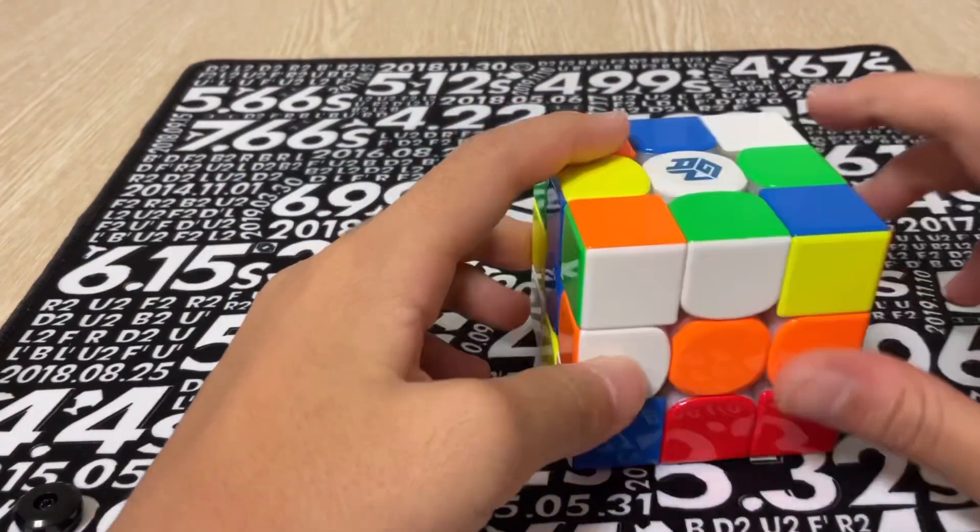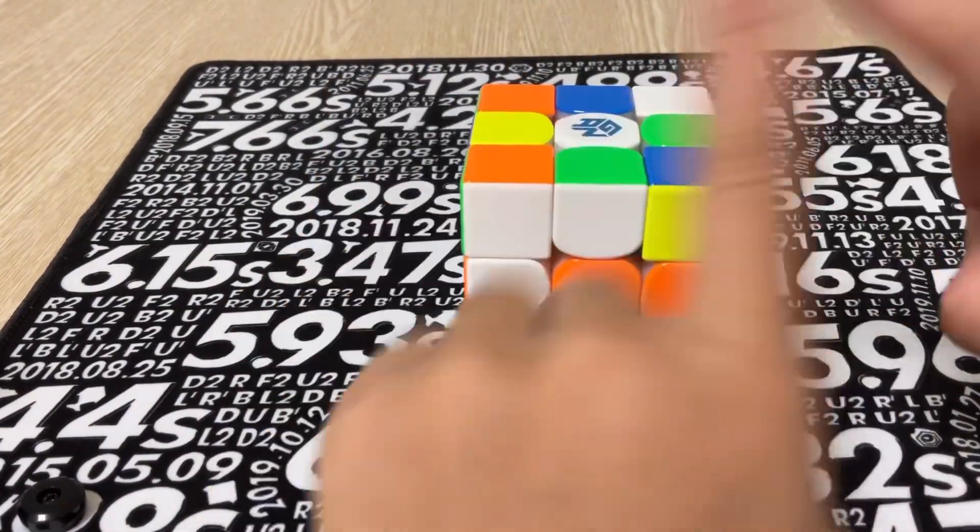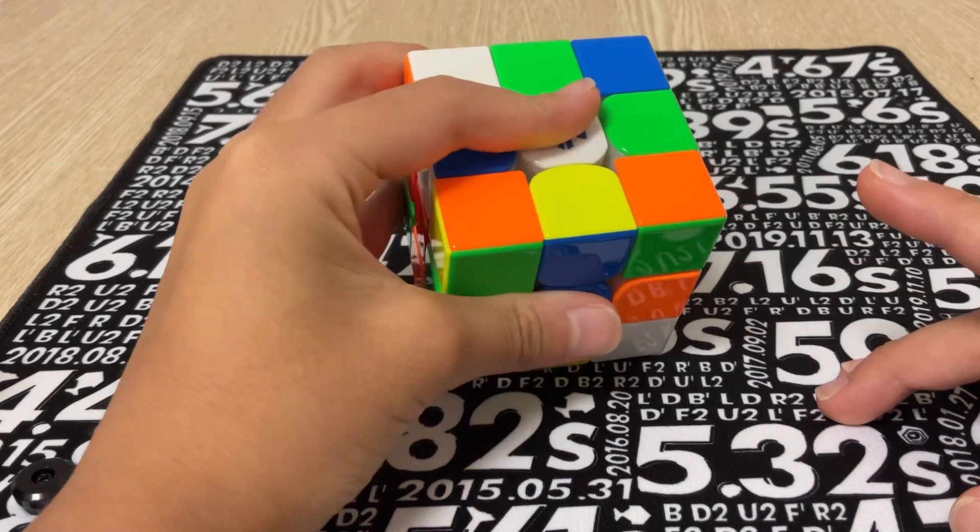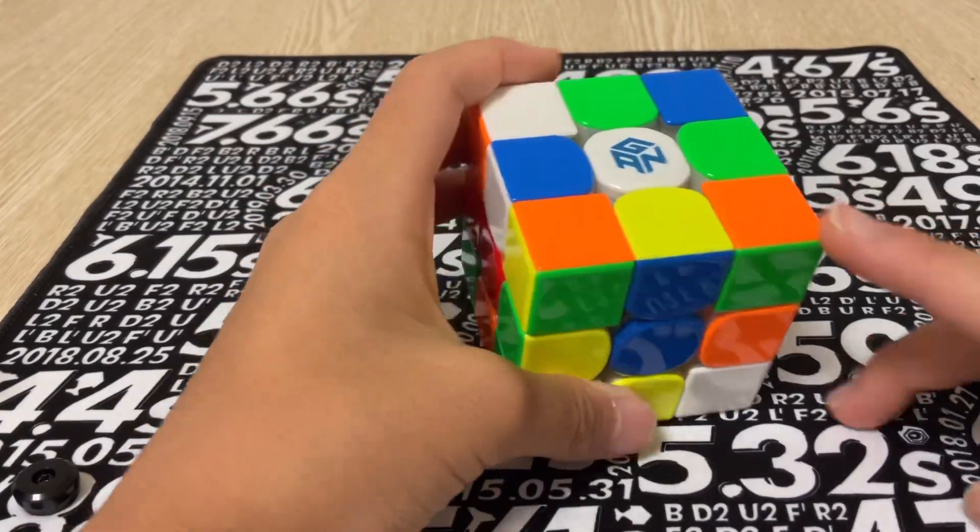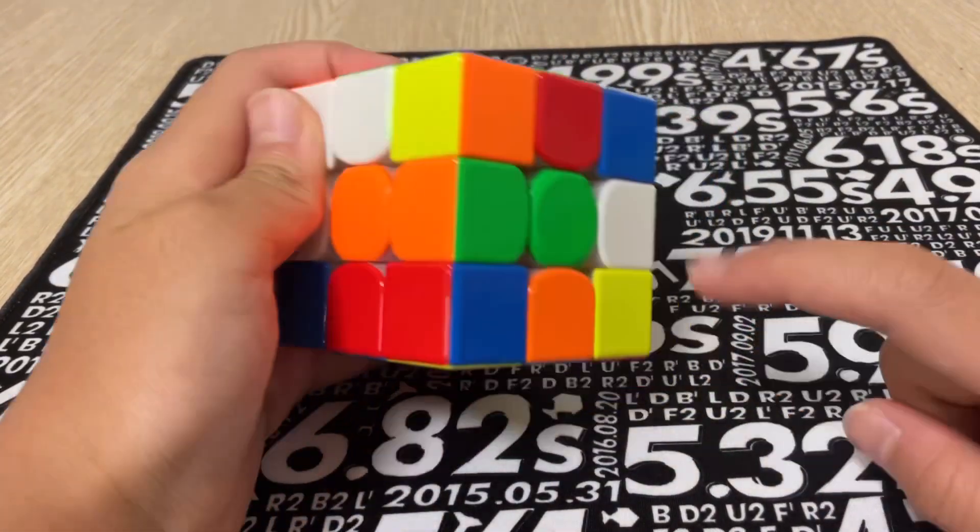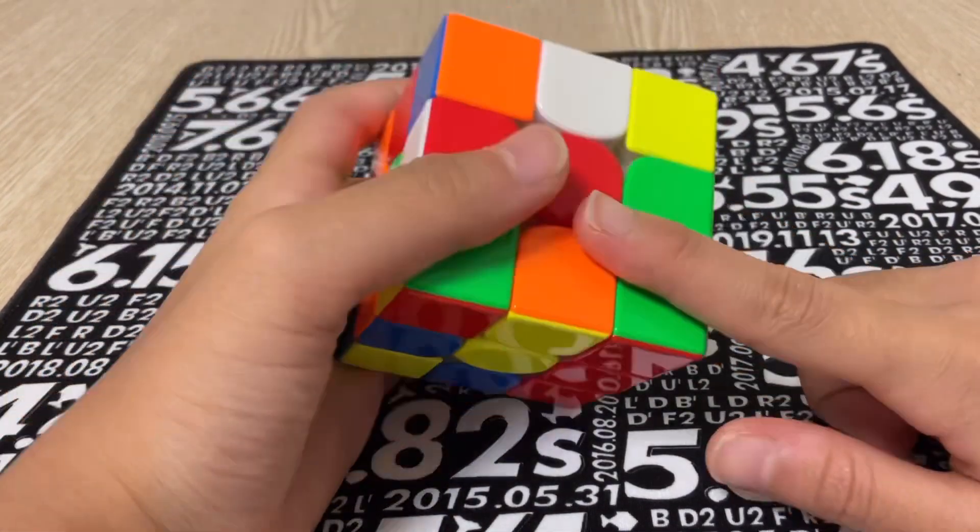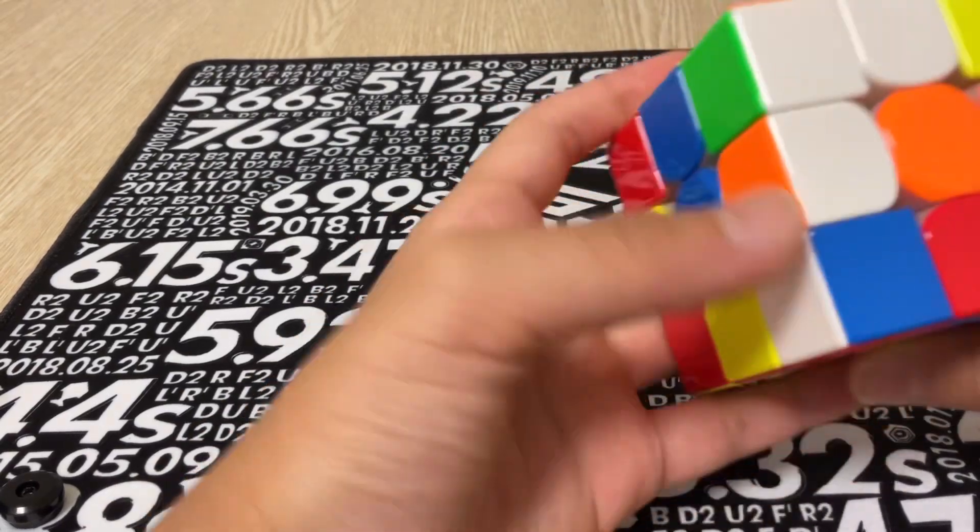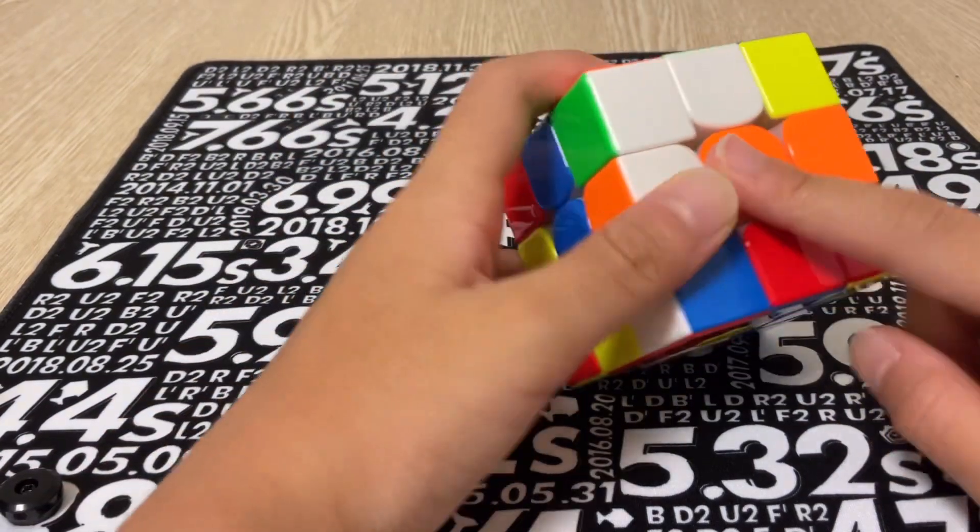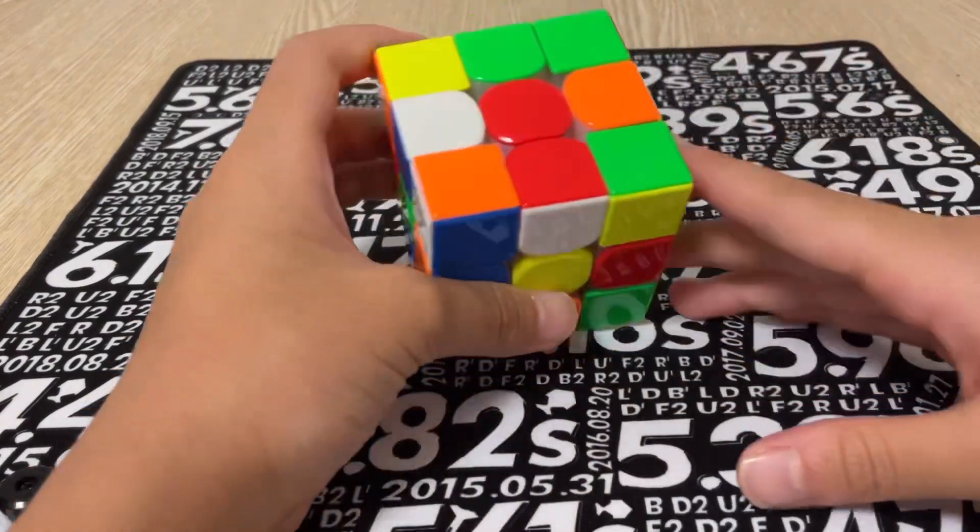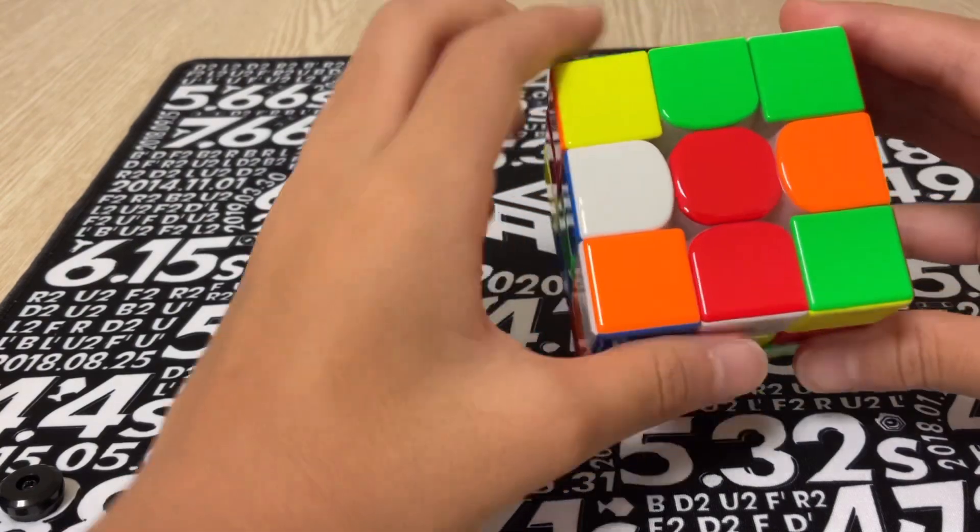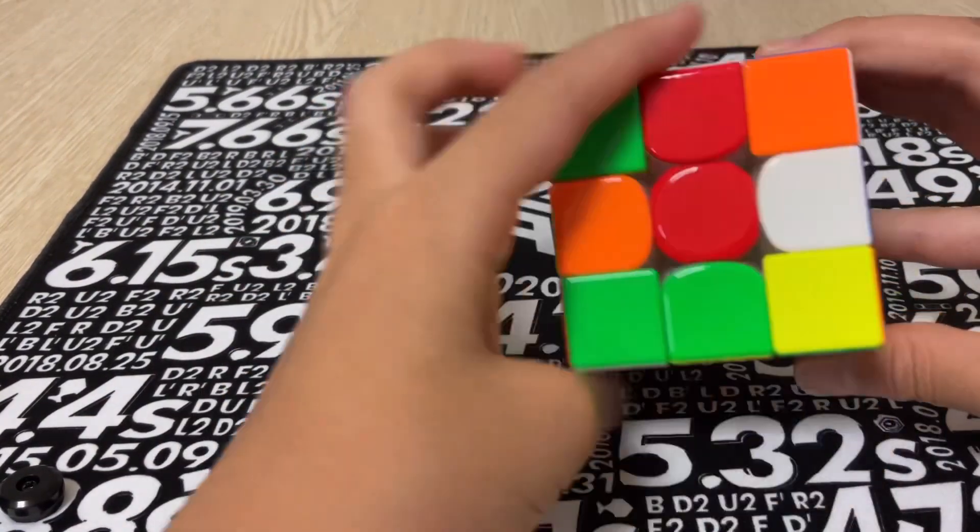Bye-bye, boo-boo. So we're going to make the cross first. The cross, the white cross. For the cross, we can make the white center at the front, well, at the top, because it's easy to make it. Then you are finding an edge, edges with the white part in it. And if there's like a color, for example, let's say orange or white, then you have to find an orange center and put it down. Sometimes it matches, like this red one. So if it matches, you can just go like this and one more. Then it comes up.